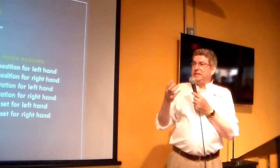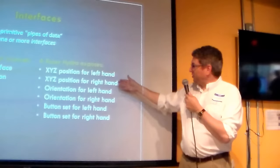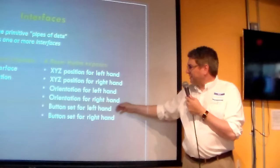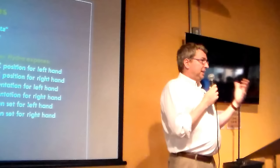So a Razer Hydra, which I think, an interface for the left hand, a position interface for the right hand, orientation interfaces, button sets, and so on. A SoftKinetic sensor, which is used by Meta, I think, has an imager interface, which is a camera, and has a small motion tracker. But, of course, it's got a depth, and so on.